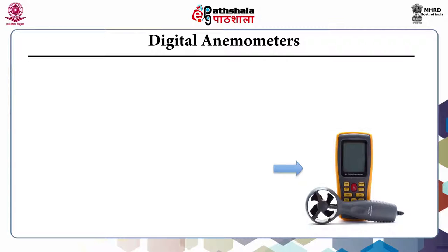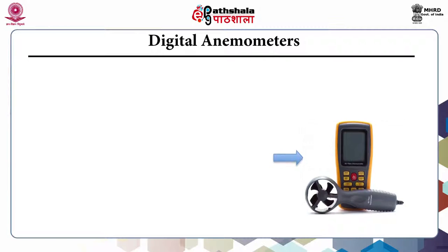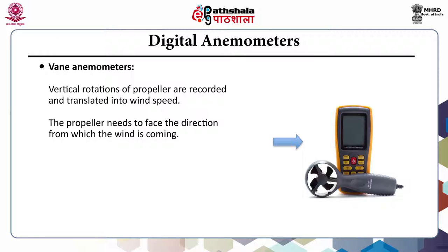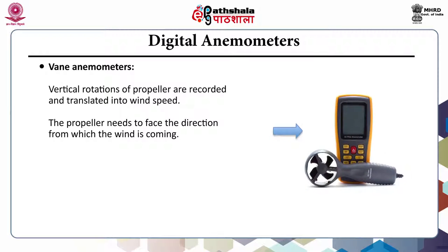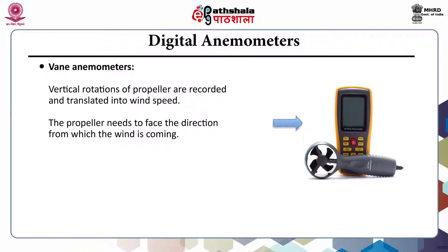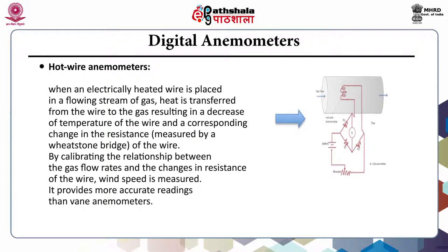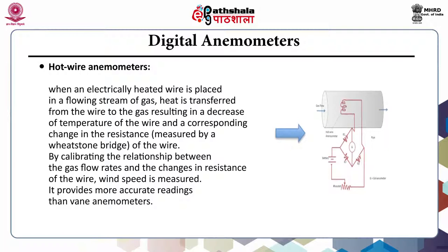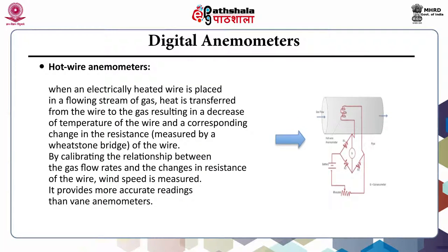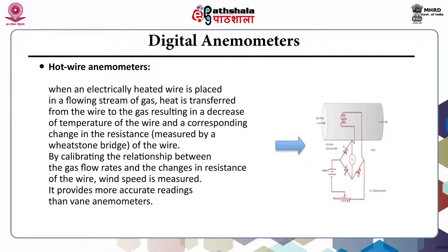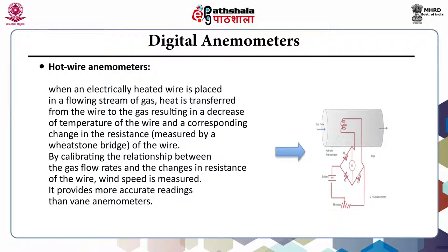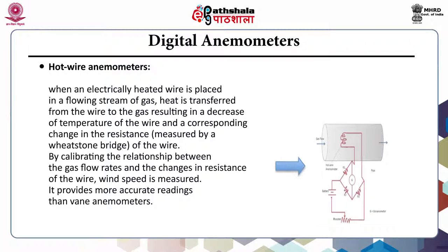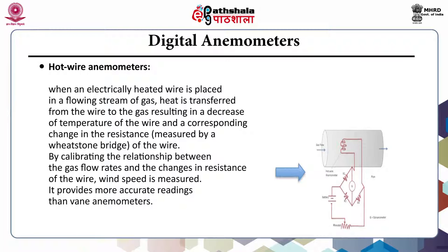Second is digital anemometers. There are two different types: vane anemometers and hot air anemometers. In case of vane anemometers, the vertical rotations of a propeller are recorded and translated into wind speed, and the propeller needs to face the direction from which wind is coming. In case of hot air anemometers, an electrically heated wire is placed in a flowing stream of gas. Heat is transferred from the wire to the gas, resulting in a decrease in temperature and a corresponding change in resistance. By calibrating the relationship between flow rate and changes in resistance, wind speed is measured. It provides more accurate readings than vane anemometers.